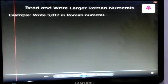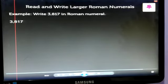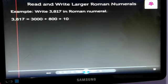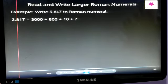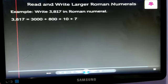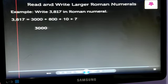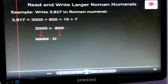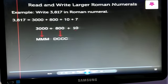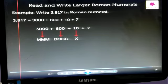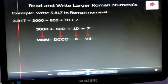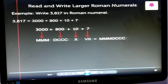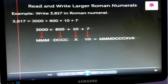Write 3817 in Roman numerals. We first write the number 3817 in expanded notation as 3000 plus 800 plus 10 plus 7. Now, write the Roman value of each, that is 3000 as MMM, 800 as DCCC, 10 as X, and 7 as VII, which equals MMMDCCCXVII.